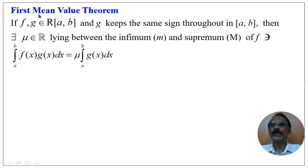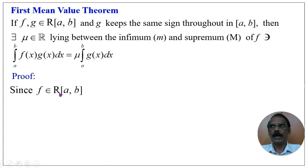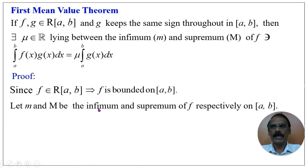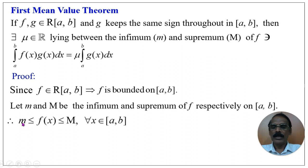We shall now prove the First Mean Value Theorem. Since f is Riemann integrable on the closed interval [a, b], it is bounded on [a, b]. Let m and M be the infimum and supremum of f respectively on [a, b]. Therefore, m ≤ f(x) ≤ M for all x in [a, b]. That is, the function f(x) takes every value from m to M.